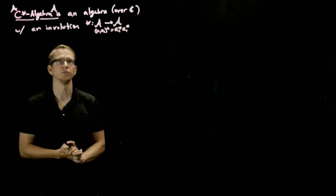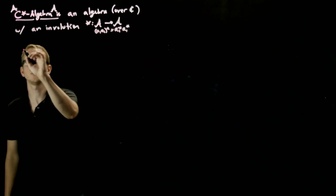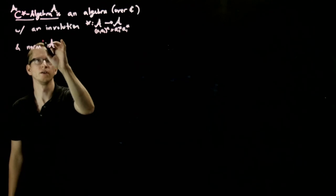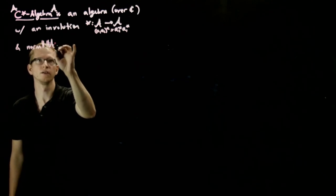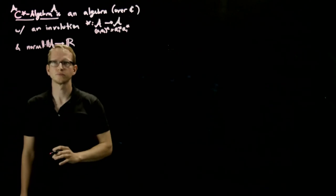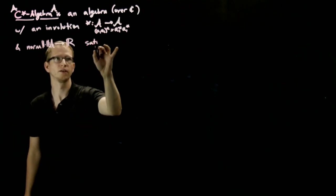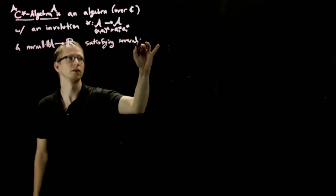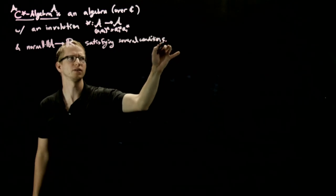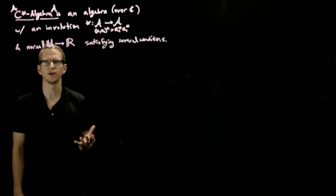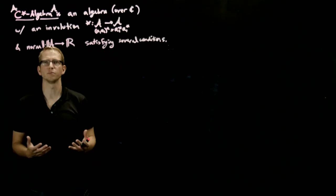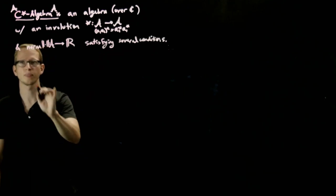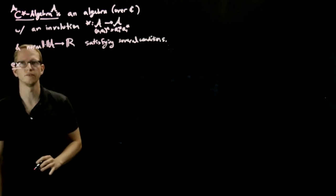So it has an involution and a norm satisfying several conditions. Rather than specifying all of these conditions, which you can look up in the literature quite easily, I'd much rather give you an intuition for what these objects look like, several examples, and how you can manipulate and understand them. So let's just give our first example.